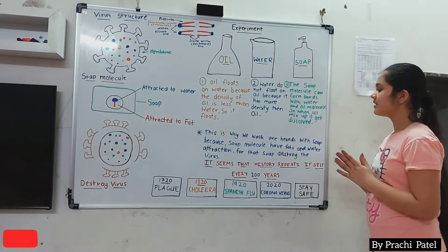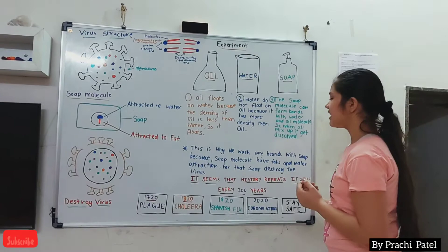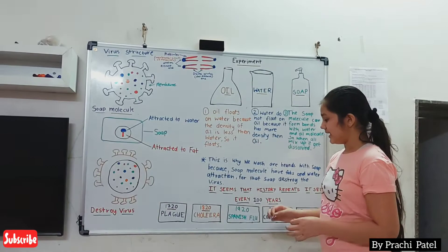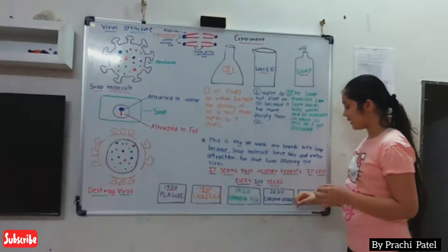Now let's look at the history and some facts about viruses. It seems that history repeats itself every hundred years. In 1720 there was the plague, in 1820 cholera, in 1920 the Spanish flu, and in 2020 coronavirus.